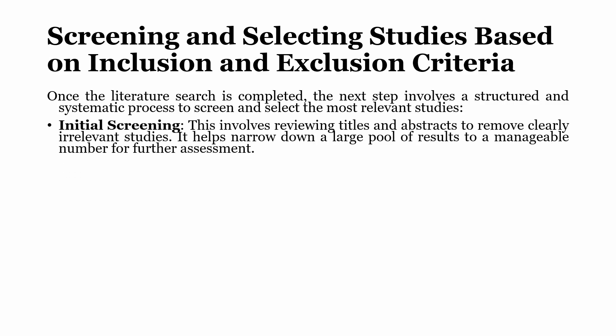Initial screening involves reviewing titles and abstracts to remove clearly irrelevant studies. It helps narrow down a large pool of results to a manageable number for further assessment.